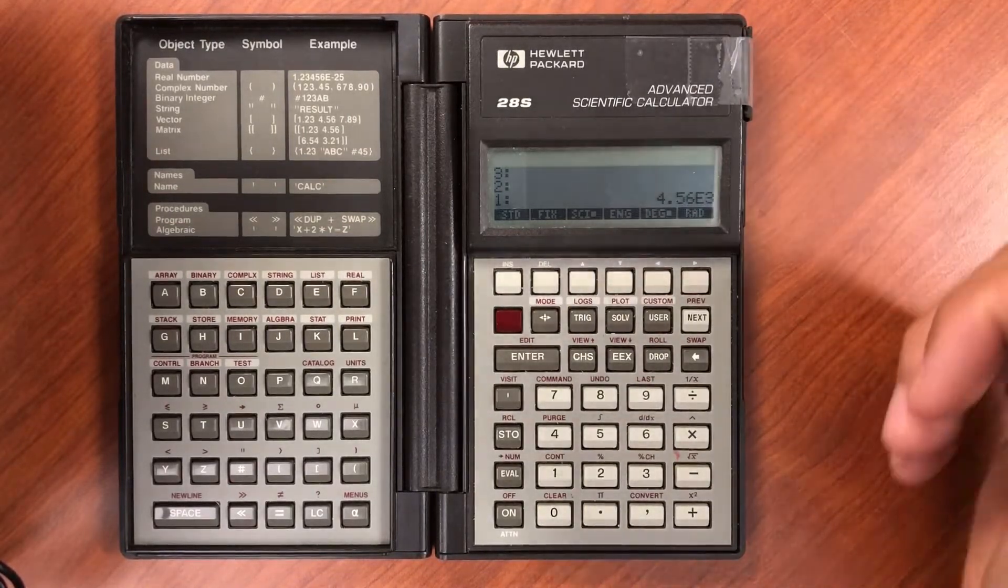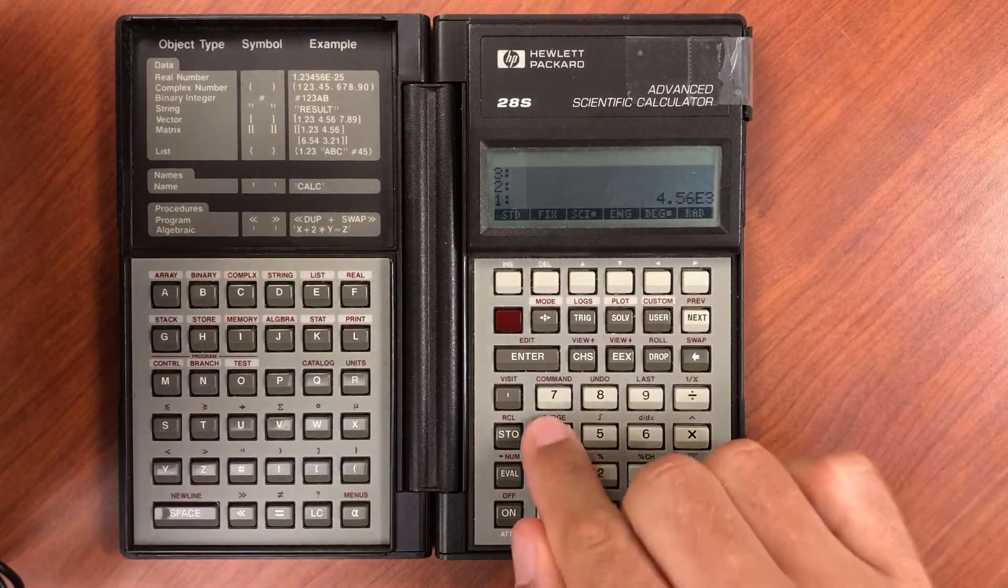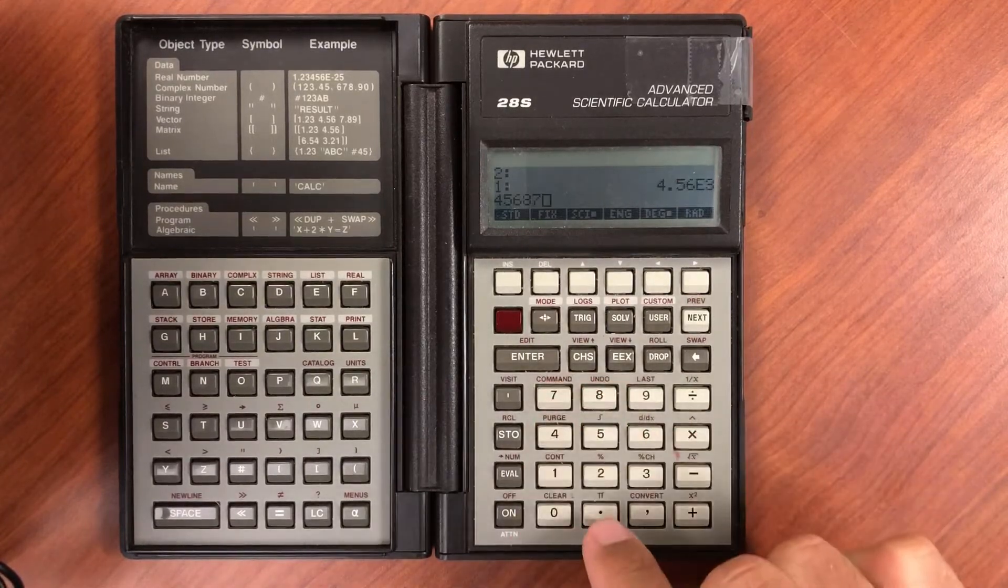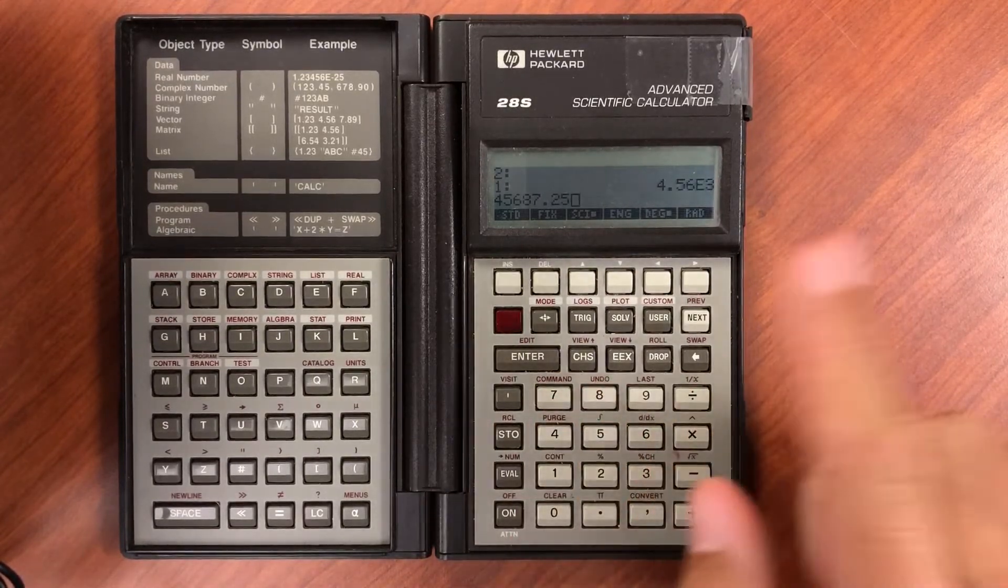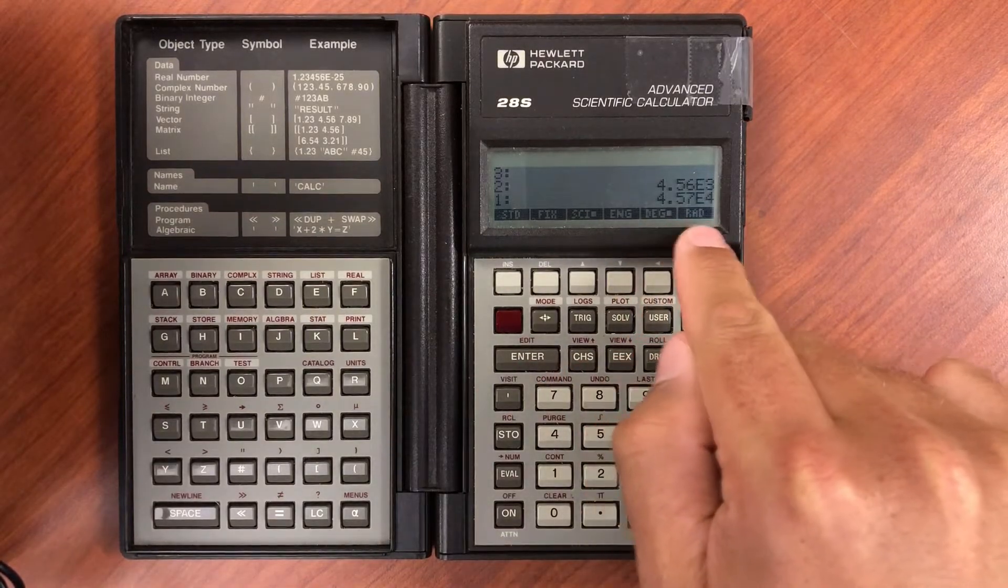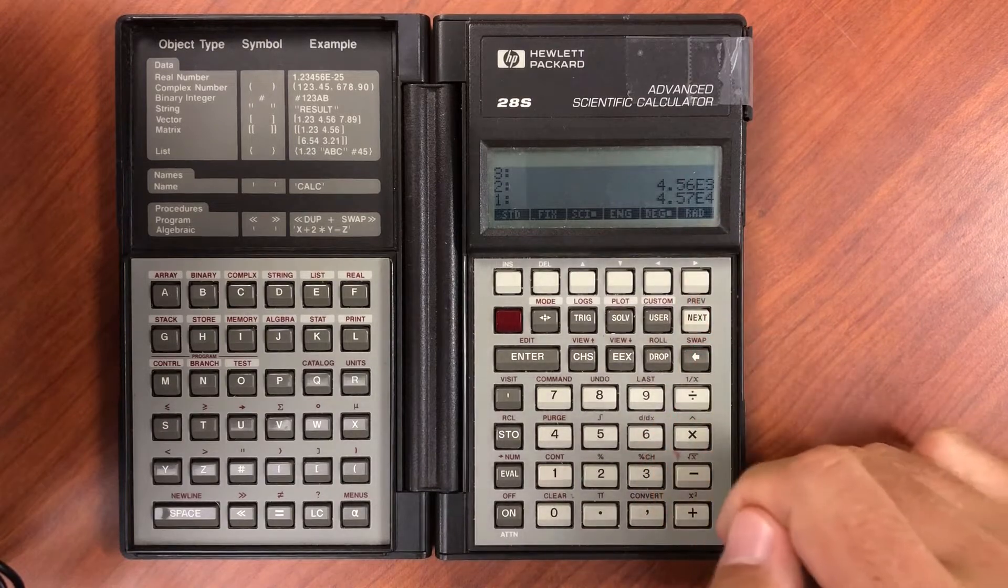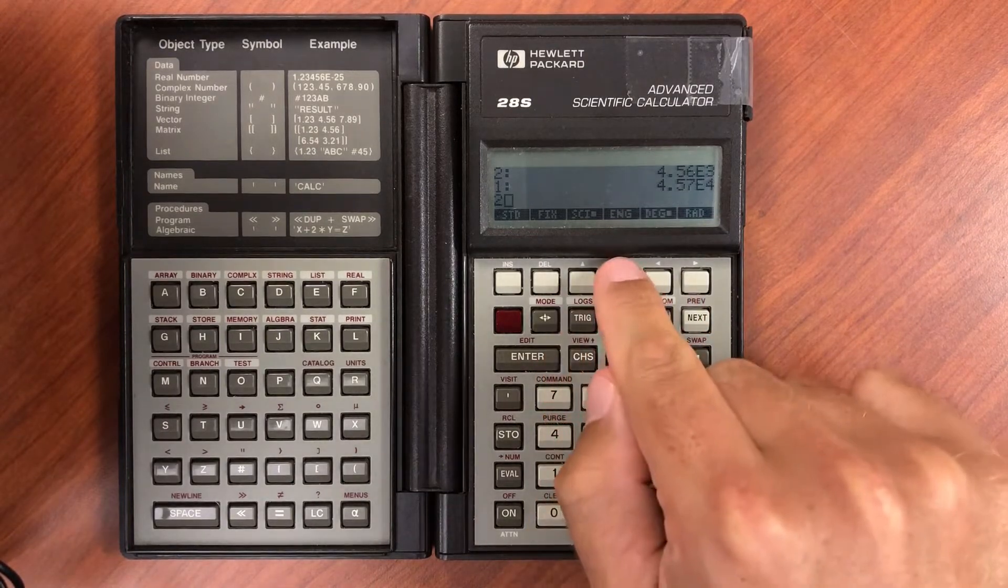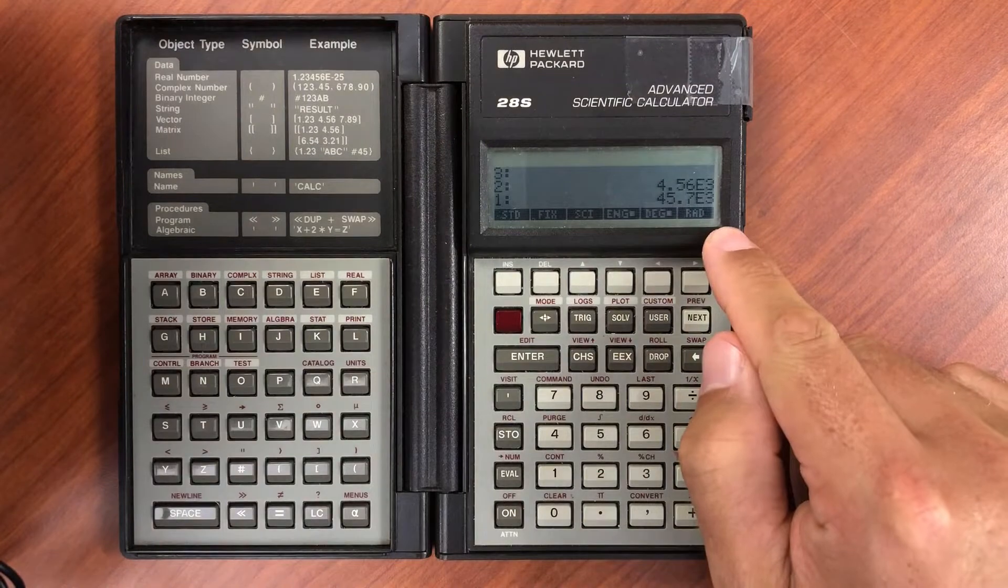So let's just do that. This would be in scientific mode - it does it with the two decimal places times ten to the fourth. If we switch it to engineering mode now, it'll do it to times ten to the third.